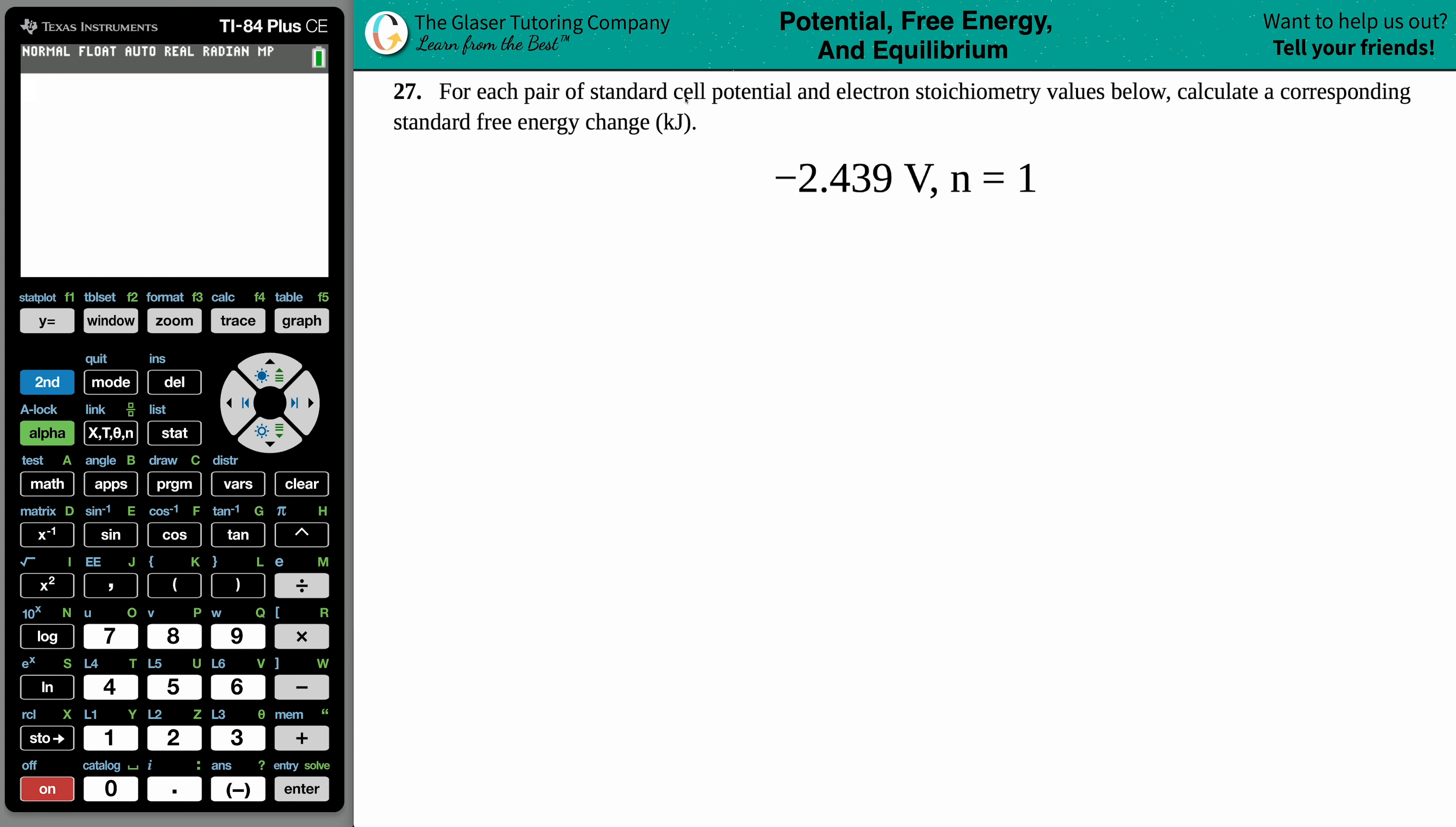Number 27. For each pair of standard cell potential and electron stoichiometry values below, calculate a corresponding standard free energy change in kilojoules.